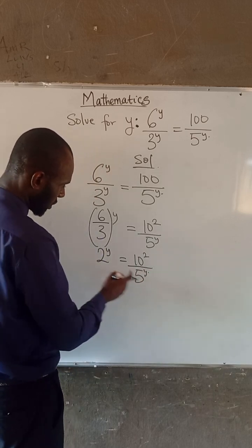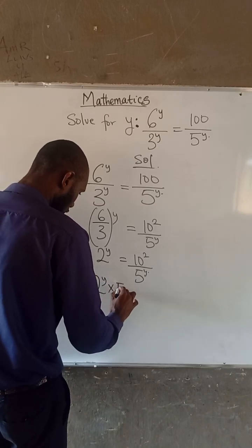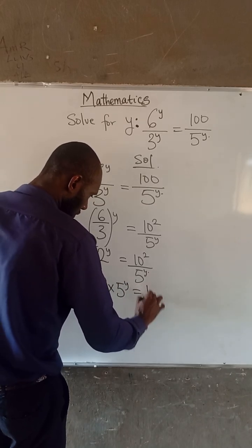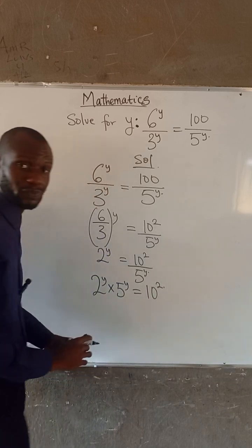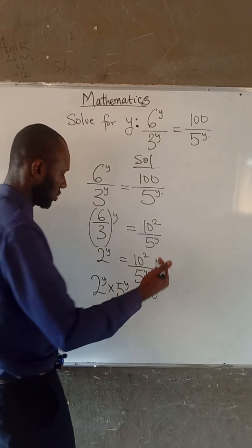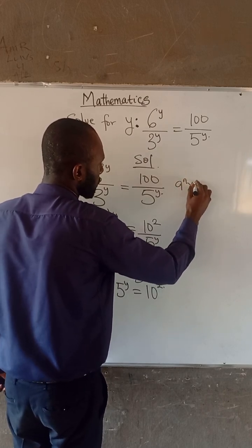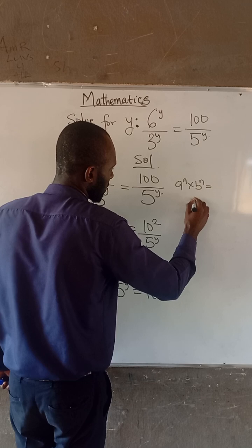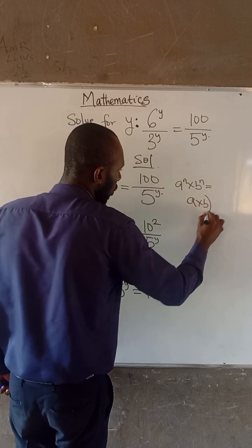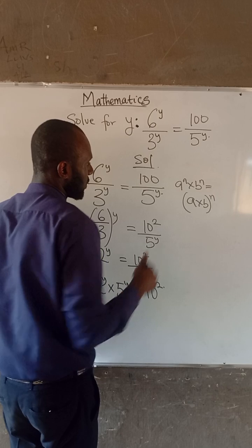We can cross multiply. So we have 2 to the power of Y times 5 to the power of Y is equal to 10 squared. From our product power law, if A to the power of N times B to the power of N, this can be expressed as A times B, all raised to the power of N, provided that they have the same index.